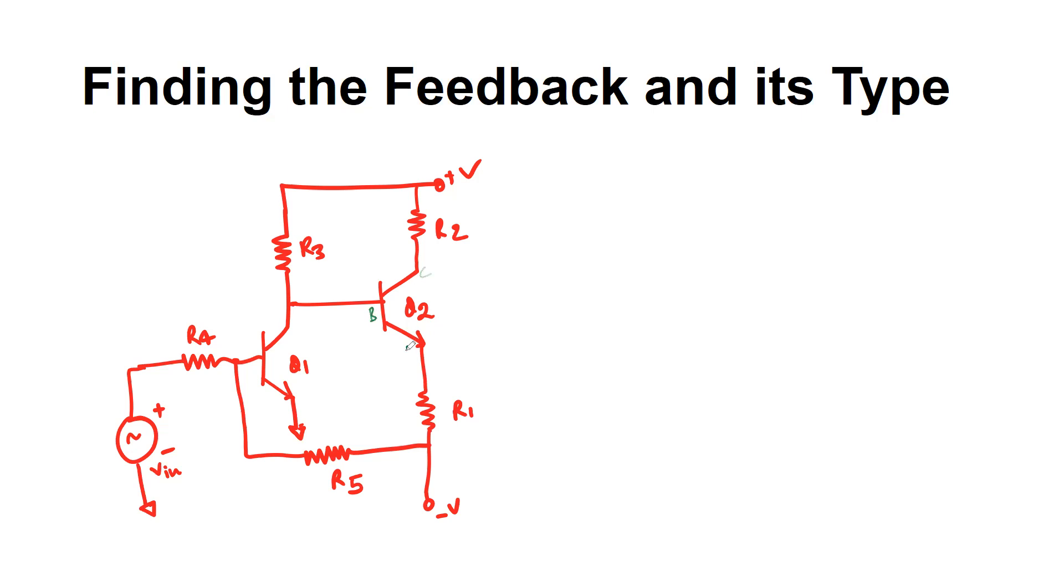From the collector of transistor Q1, you have a resistor R3 all the way connected to the positive supply. Emitter is grounded here, and to the base through R4, we have this external applied AC signal source.